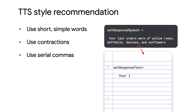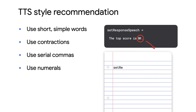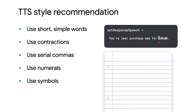Use a serial comma in a list of three or more items. Without the serial comma, individual items in your list can be incorrectly heard or misinterpreted as groups. For example, 'your last orders were of yellow roses, daffodils, daisies, and sunflowers' — daisies and sunflowers are clearly separated with the serial comma. Use numerals instead of text, as numerals make visual content more glanceable. Similarly, use symbols like a currency sign instead of text — so instead of using the word 'dollar,' use the dollar sign.